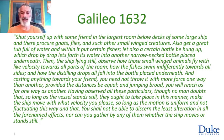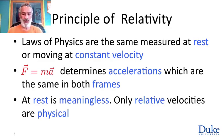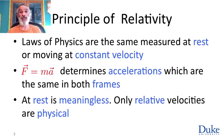Galileo didn't know the math that underlies this. The math was articulated by Newton. Newton's law, F equals ma — this is everything — says that the laws of physics determine the accelerations of objects. When you measure the acceleration of something from a laboratory that is at rest, or from a lab moving with a constant velocity, you get exactly the same answer.